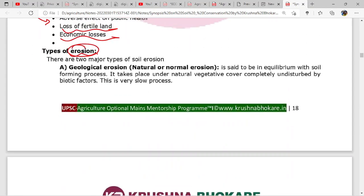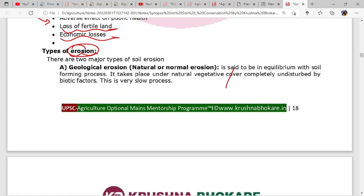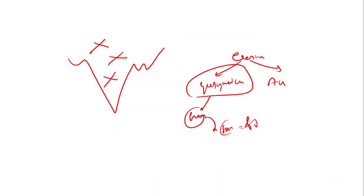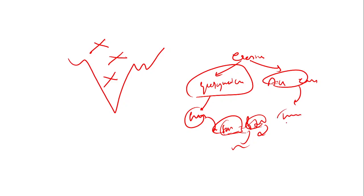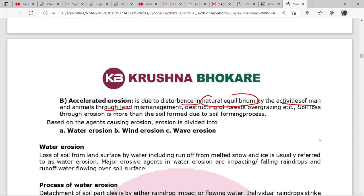Erosion has two types: geological erosion and accelerated erosion. Geological erosion is a natural process where soil is getting depleted and forming at the same rate. Accelerated erosion is because of mankind's stress on soil and land resources - it is the disturbance in natural equilibrium by activities of man and animals through land mismanagement, destruction of forests, overgrazing, where soil loss through erosion is more than soil formation through the soil-forming process.